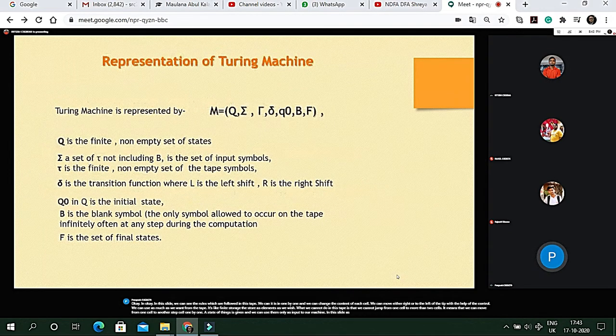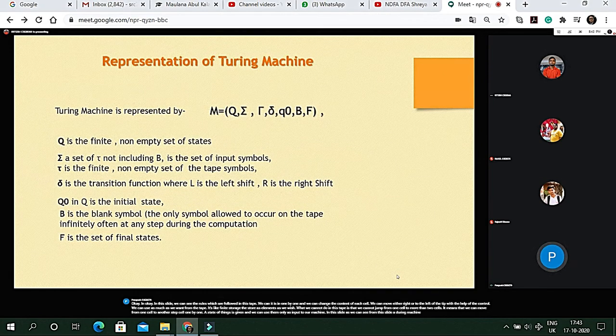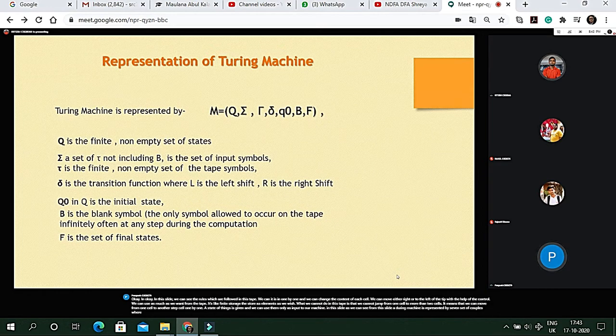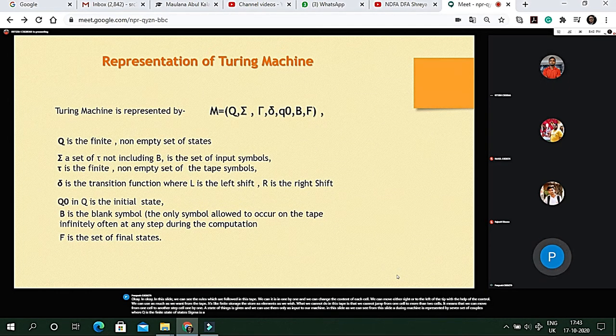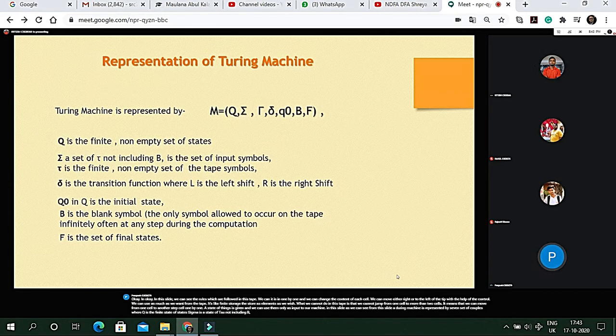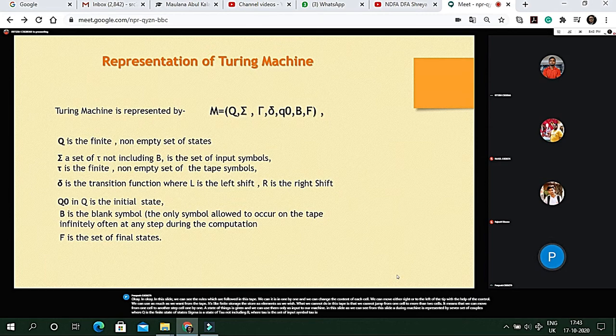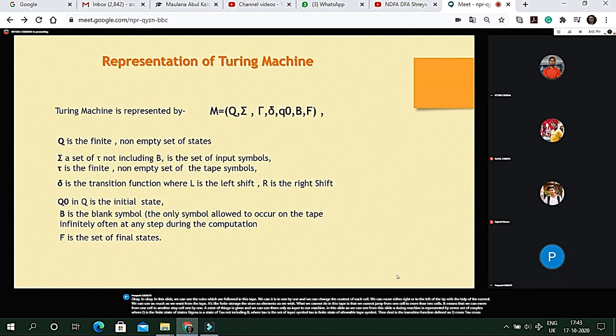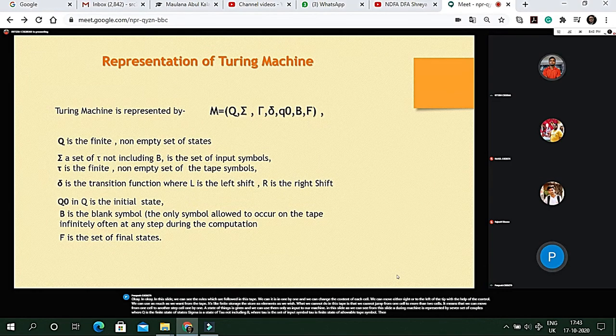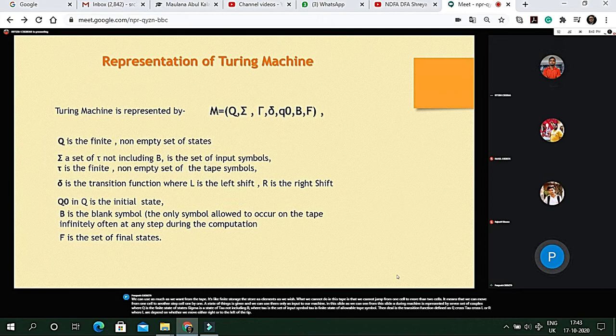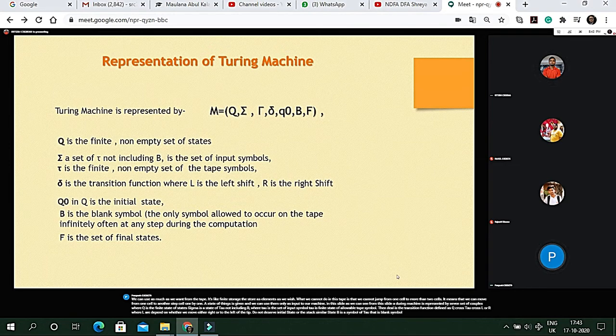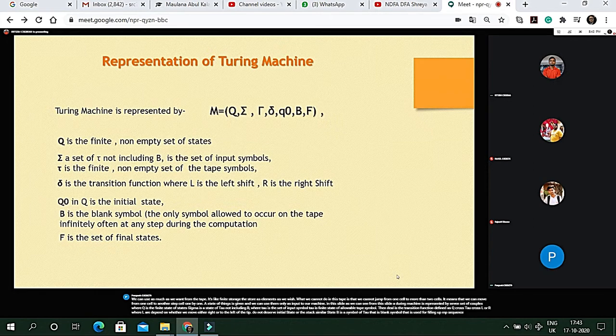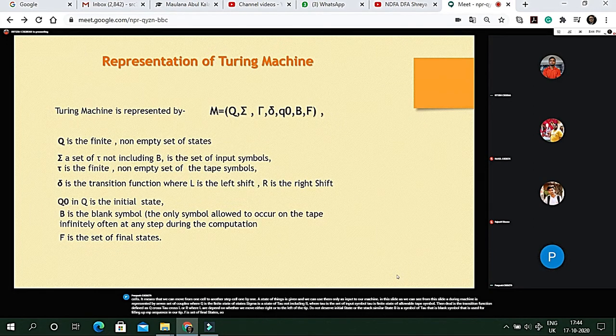In this slide, a Turing machine is represented by seven set of tuples. Where Q is the finite set of states. Sigma is a set of tau not including B. Where tau is the set of input symbol. Tau is finite set of allowable tape symbol. Then del. Del is the transition function defined as Q cross tau to Q cross tau cross L or R. Where L, R depend on whether we move either right or to the left of the tape. Q naught is our initial state. B is a symbol of tau that is blank symbol, used for filling up empty sequence in our tape. F is set of final states.